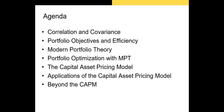In this section we'll cover modern portfolio theory and tangential topics. We're going to start with correlation and covariance, because you need to know what those are and how you calculate them. Next we'll cover portfolio objectives, efficiency, and how we define it, and then portfolio variance and standard deviation. After that we're going to introduce modern portfolio theory, or MPT.